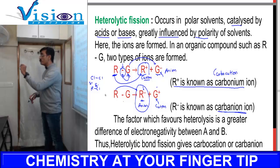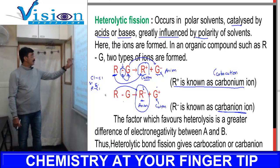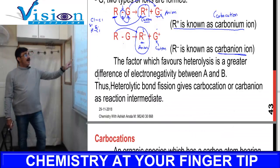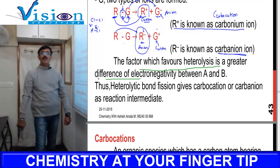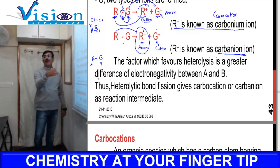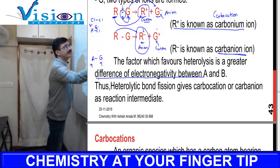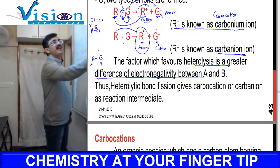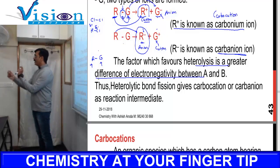I have introduced all three to you. The factor which favors heterolysis is a greater electronegativity difference. Heterolytic fission normally occurs when the electronegativity difference between the two elements or groups in the compound is very high. If the difference is less, the trend to form heterolytic fission will be lower.